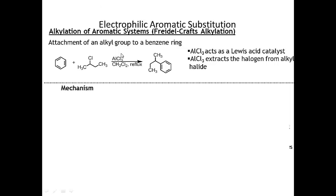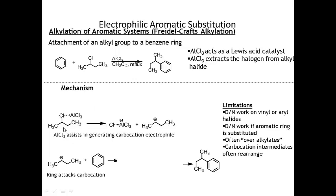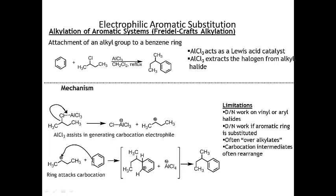The next reaction is Friedel-Crafts alkylation, in which I add an alkyl group to benzene. What I need is a benzene ring, an alkyl halide, and aluminum chloride (AlCl3), which acts just like iron bromide as a catalyst. Aluminum chloride extracts the halogen from the alkyl halide. In the mechanism, the first step is extraction of the chlorine by AlCl3 - the carbon-chlorine bond breaks, giving an aluminum chloride complex plus a secondary carbocation.